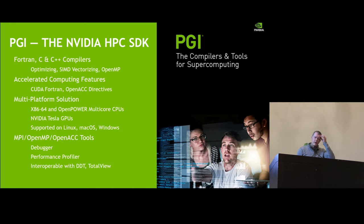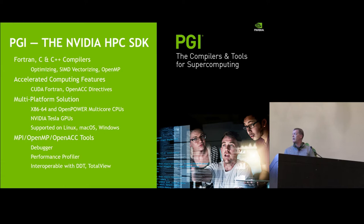If you have not heard of PGI, you can think of us as NVIDIA's HPC SDK. We have Fortran, C, and C++ compilers that support optimization, SIMD vectorization, OpenMP for multi-core CPUs, MPI interoperability for scalable systems, and GPU support with CUDA Fortran and OpenACC directives. Supported on x86 CPUs plus Tesla, OpenPower CPUs plus Tesla on Linux, and on x86 on macOS and Windows as well.